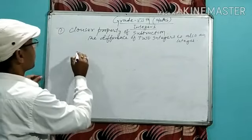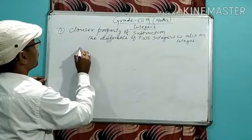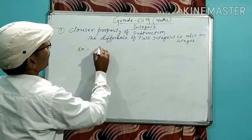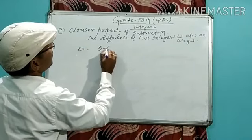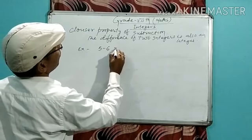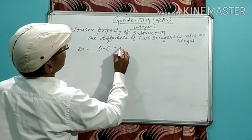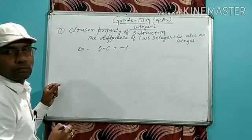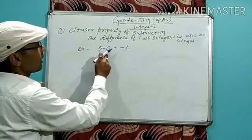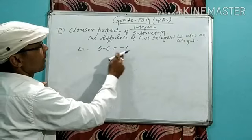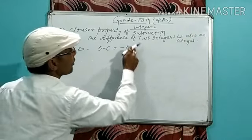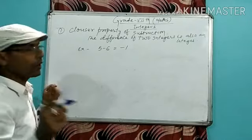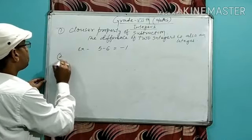Let a and b be two integers; the difference between a and b will be equal to an integer. For example, suppose 5 minus 6 — what will it be? Minus 1. Both are integers and the result is also an integer.